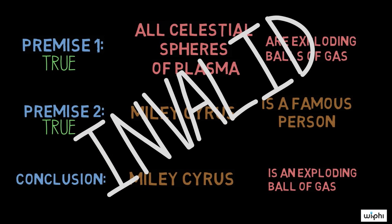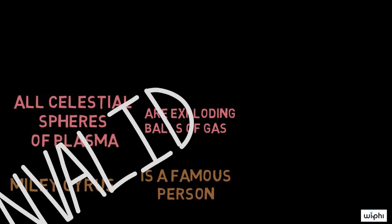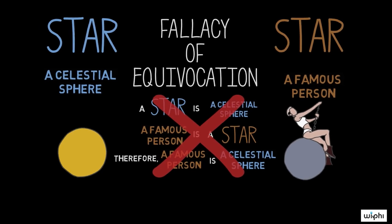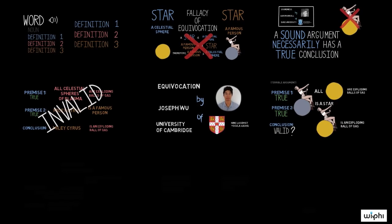This example is surely far-fetched. After all, no one has ever equivocated Miley being a famous person with Miley being an exploding ball of gas. But now that we understand how this fallacy generally works, let's look at two examples that are not so easy to spot.